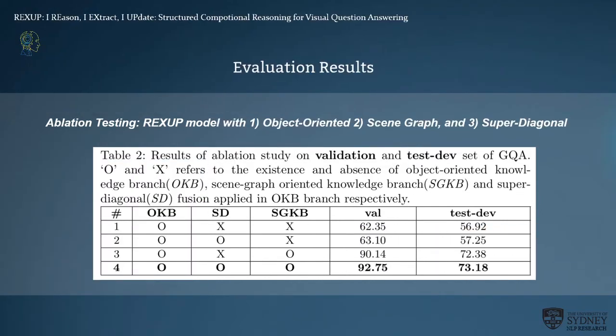Additionally, applying superdiagonal fusion is another key point of our model's success on GQA. We compared the model using superdiagonal fusion against simple element-wise multiplication. The results show that using element-wise multiplication causes a drop of 3% on the validation set and around 1% on the test dev set, demonstrating that the concrete interaction between image features and question features via superdiagonal fusion contributes significantly to VQA performance.